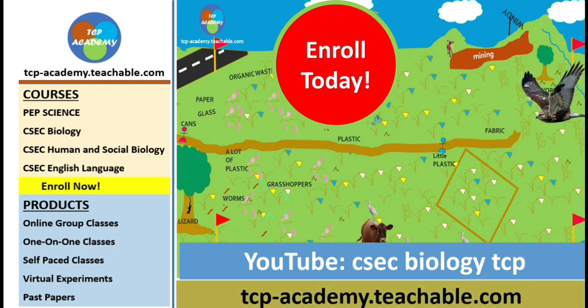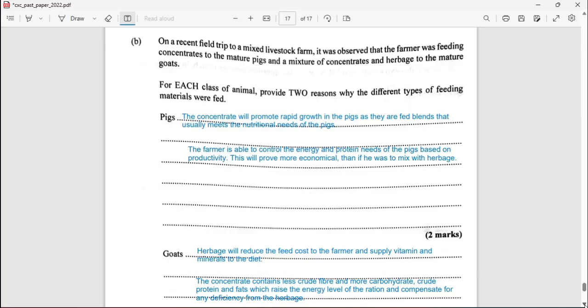On a recent field trip to a mixed livestock farm it was observed that the farmer was feeding concentrates to the mature pigs and a mixture of concentrate and herbage to the mature goats. For each class of animal provide two reasons why the different types of feeding materials were fed.